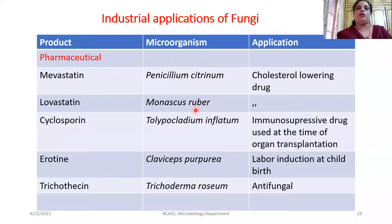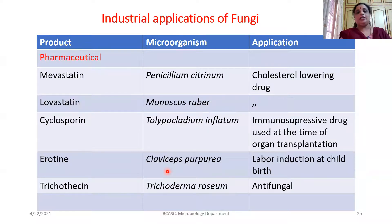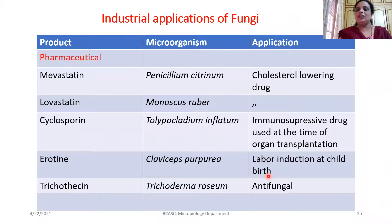We also have ergot, produced by Claviceps species, which has been extensively used. Even though ergot is also a mycotoxin, it plays a major role especially during childbirth — it is given as an injection so that contraction of the uterus happens and delivery of the baby becomes easier. So it has been extensively used in medicine.